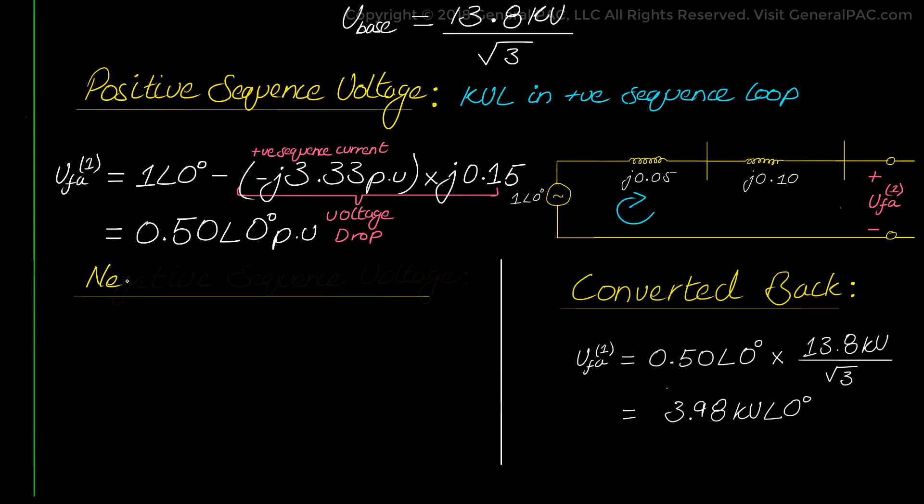Now as discussed earlier, the negative sequence voltage will also be equal to 3.98 kV at angle 0 degrees. So both the positive sequence and the negative sequence voltage will be equal.